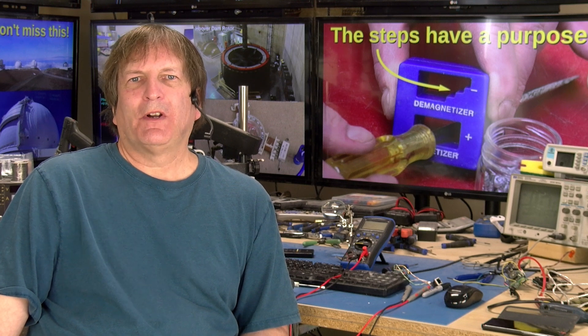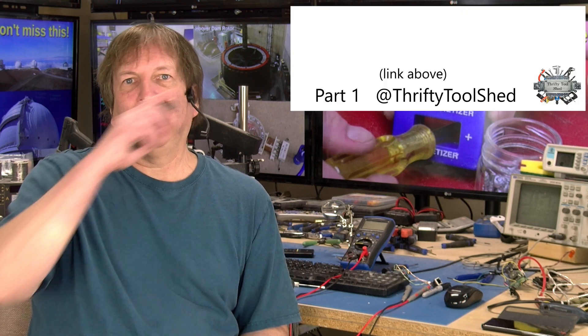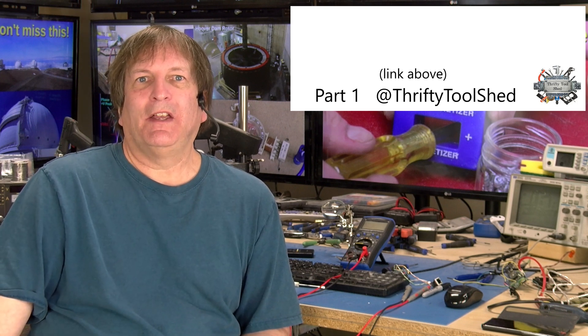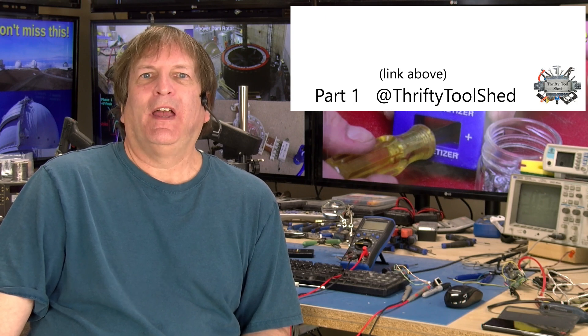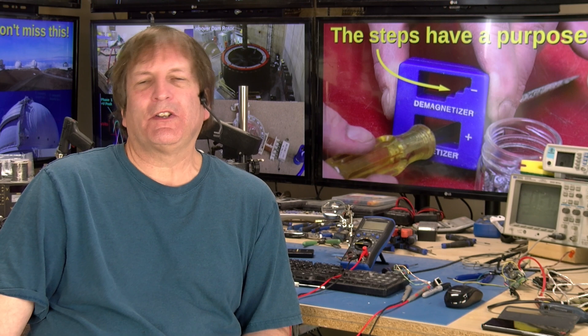So this is actually part two of a video I did with Philip from the Thrifty Tool Shed channel about why electronic things fail and how manufacturers design the failure rate right into the things you buy. If you want to see part one first, click here and it'll take you to part one. And then come back here to see part two, or just watch part two right now and I'll give the link to part one again at the end of the video. It actually doesn't really matter which part you see first.